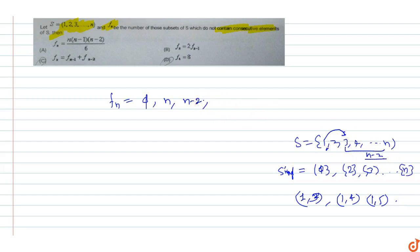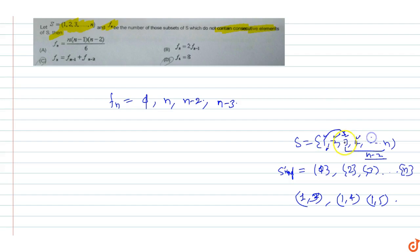Similarly, with 2 as the starting element, we get n minus 3 subsets. With 3, we get n minus 4 subsets, and so on, continuing this pattern down to the last valid element.